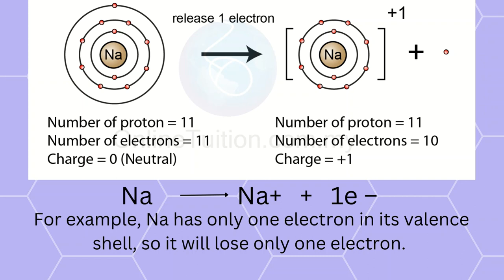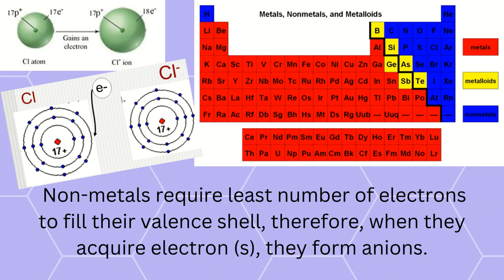Number of electrons and protons in sodium atom is 11, whereas sodium ion has 10 electrons and 11 protons. Therefore, charge develops: lose one electron, gain plus one charge.